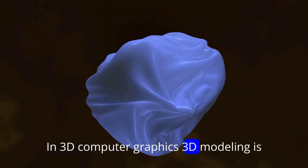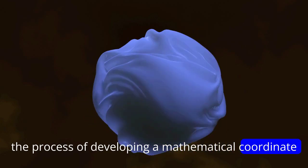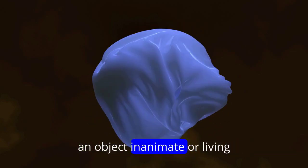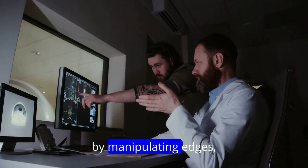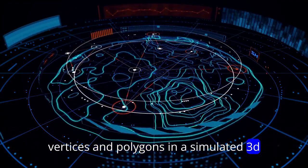In 3D computer graphics, 3D modeling is the process of developing a mathematical coordinate-based representation of a surface of an object, inanimate or living, in three dimensions via specialized software by manipulating edges, vertices, and polygons in a simulated 3D space.